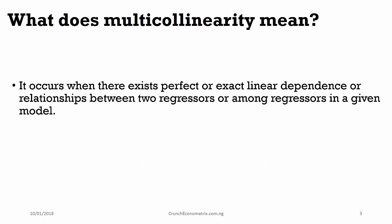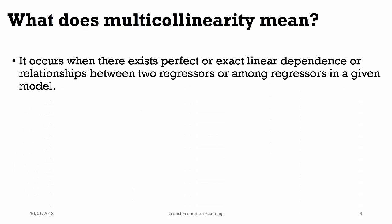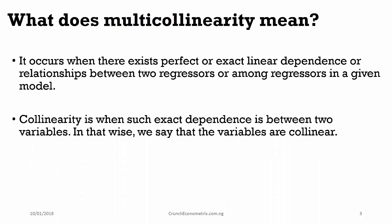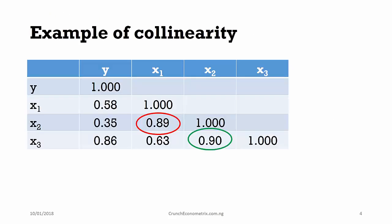Multicollinearity simply means when there exists perfect or exact linear dependence relationships between two regressors or among regressors in a given model. We use the term collinearity when we are referring to two regressors and when we have more than three regressors we use the term multicollinearity.